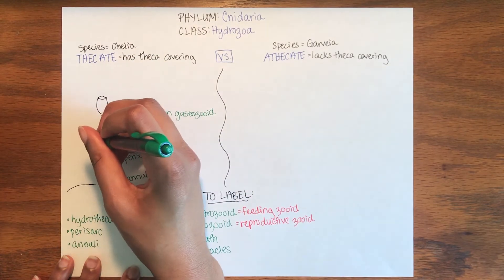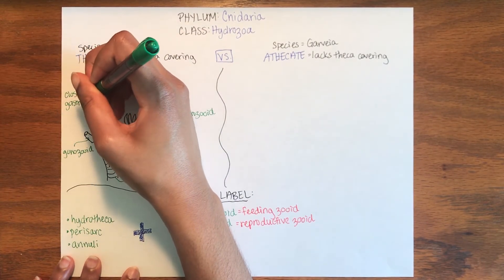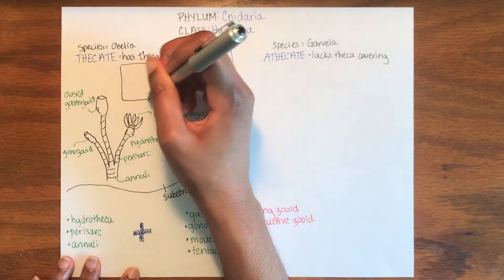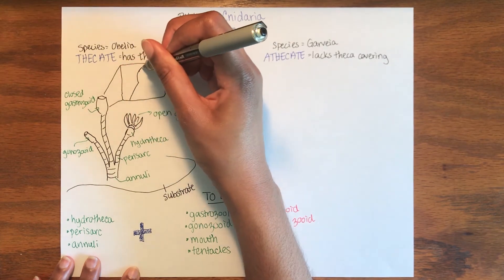The gonozoid contains reproductive organs and lacks tentacles. The gastrozoid is the feeding zooid. The surrounding theca offers a protective shell so the hydroid can retract when faced with a disturbance.